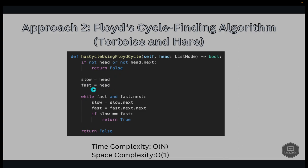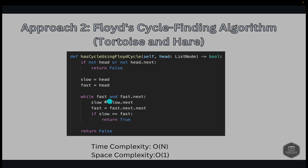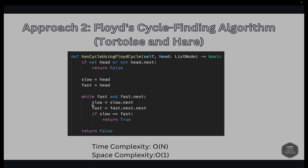We initialize fast and slow pointers to head. We check if fast is None or fast.next is None — if so, we break out of the loop. If not None, we continue iterating. When fast is not None and fast.next is also not None, slow is updated to slow.next (one step) and fast is updated to fast.next.next (two steps). Then we check if slow equals fast — if so, return true because there is a cycle.